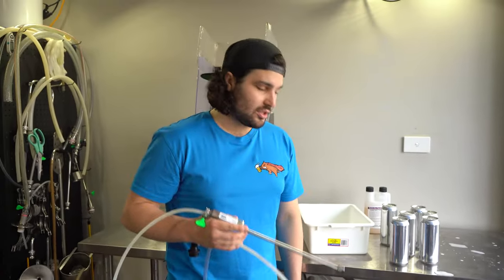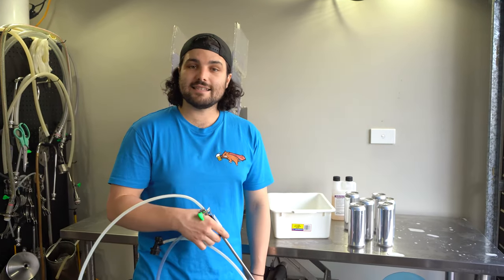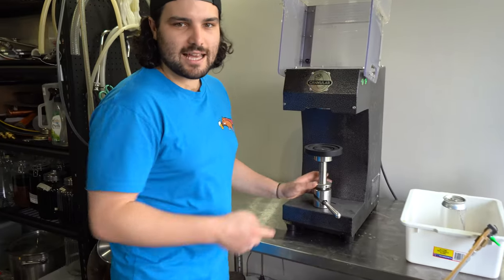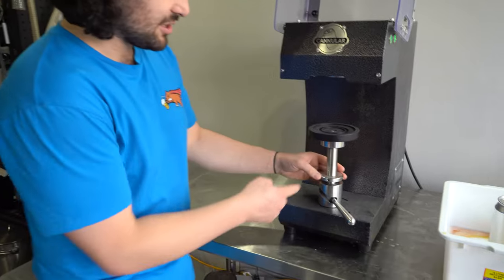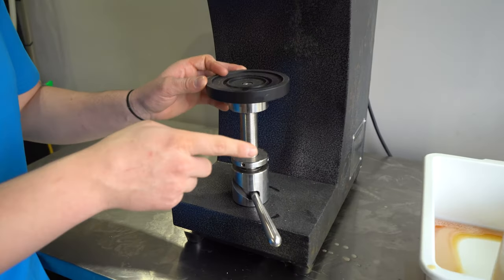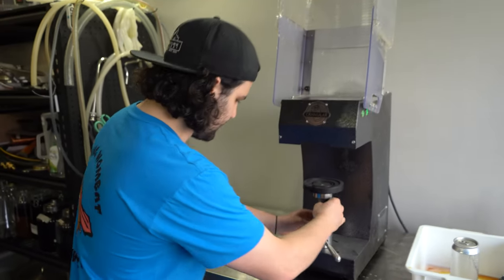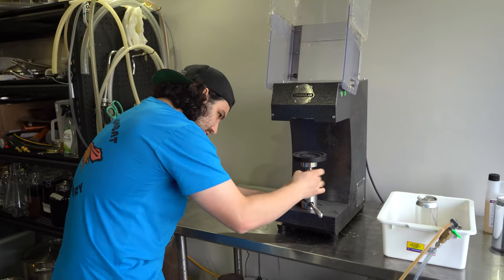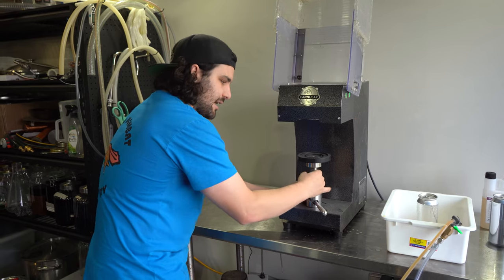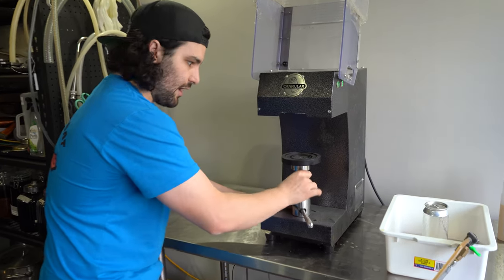So setting up the canning machine, what I mean by that is literally we just need to make this the right height for the 500ml cans. I had this set up for 330ml cans so we just got to lower this a bit. So this thing just twists lower and lower and lower until it's at the right height for the 500ml cans.